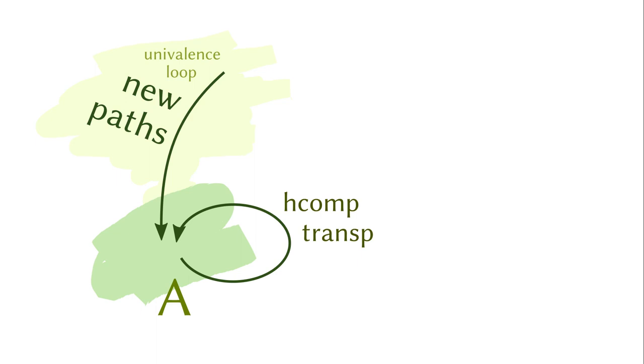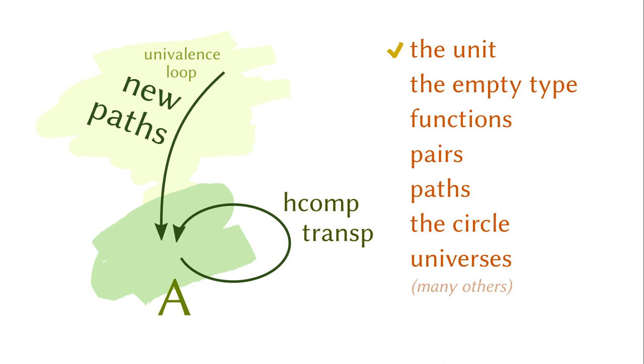In sum, we previously had a crisis of not having enough paths. Our solution is to introduce homogeneous composition and coercion. However, this means we need to review all the types and equip each of them with the new operators. We have done one, but there are many more. See you on Thursday. Bye.